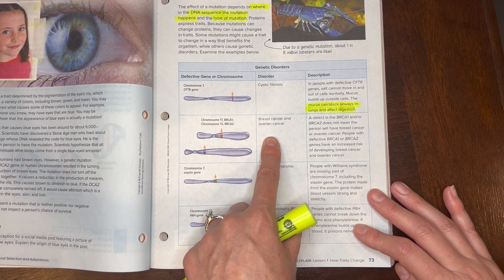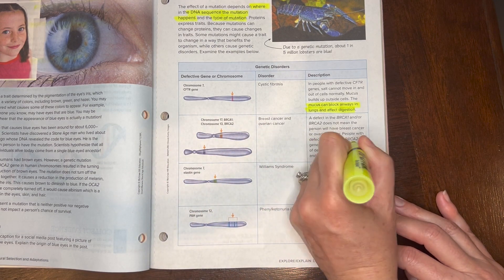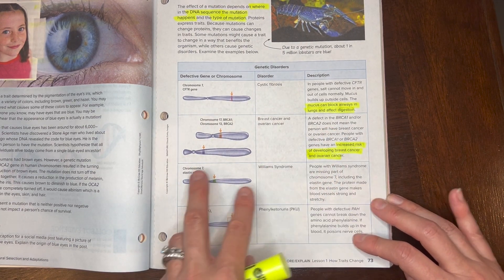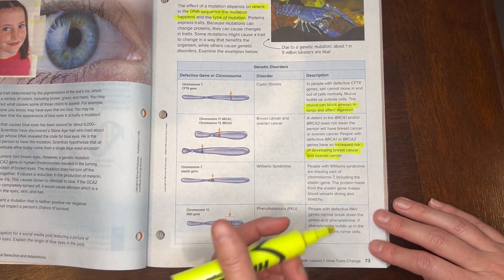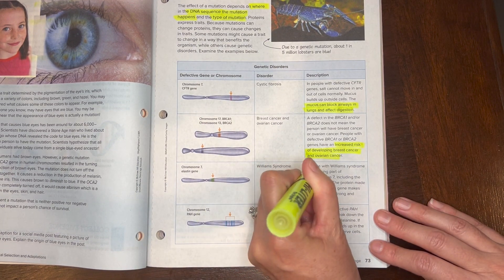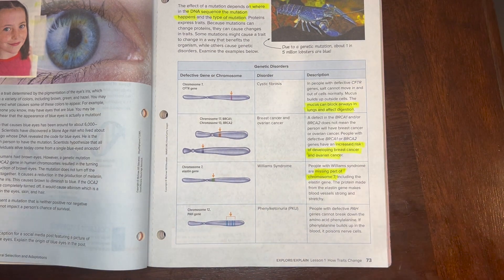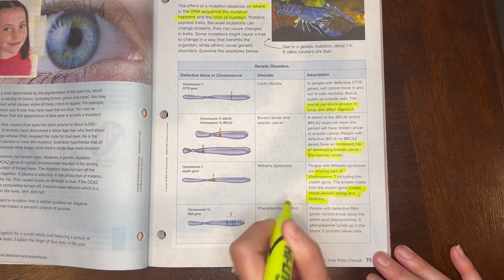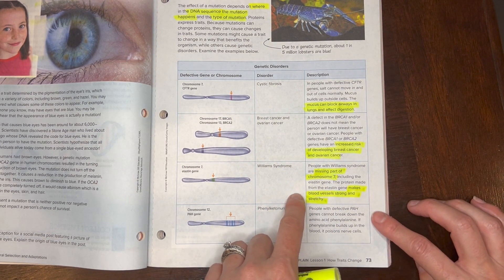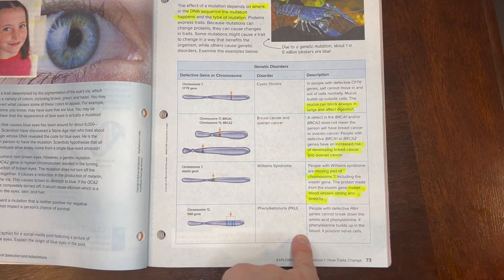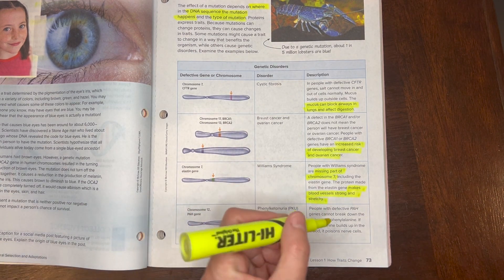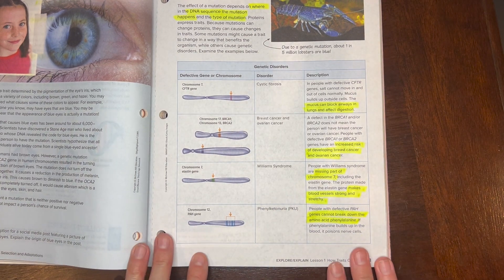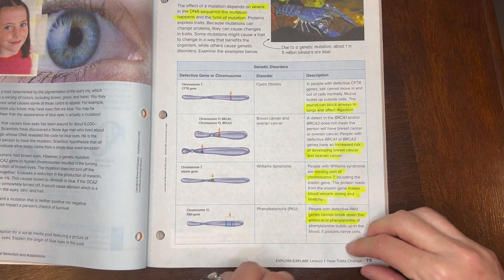Breast cancer and ovarian cancer—it could increase your risk of developing this cancer if you have a defect in one of your chromosomes. Williams syndrome, they're actually missing part of your chromosome, that's that deletion, and it makes the blood vessels strong and stretchy so it kind of weakens that. And then there's PKU in which the genes cannot break down amino acids. You can research any one of these, find out a little bit more about it and write that in your notes.